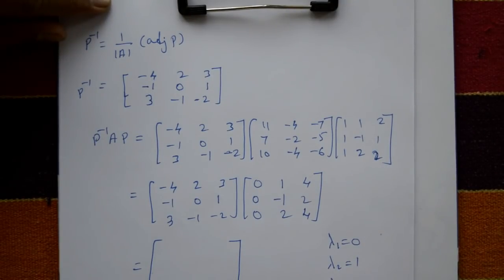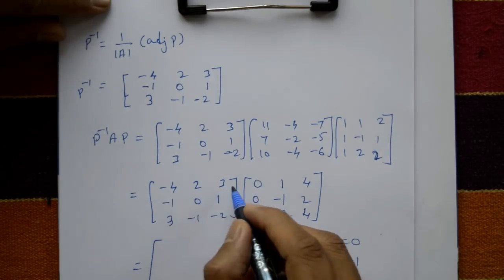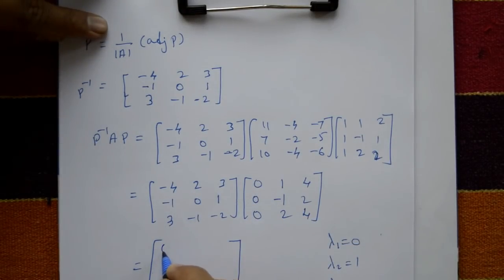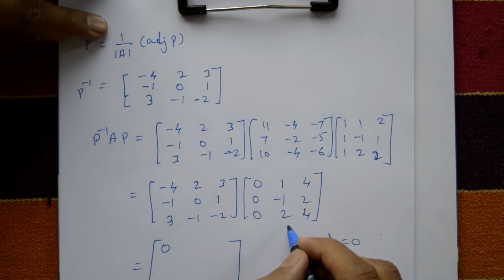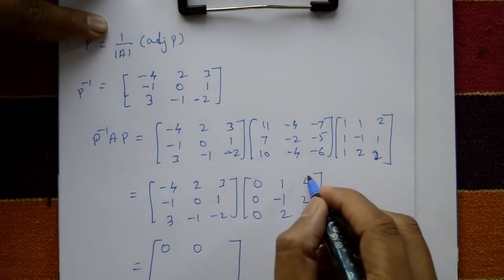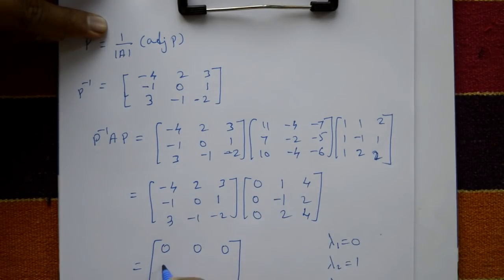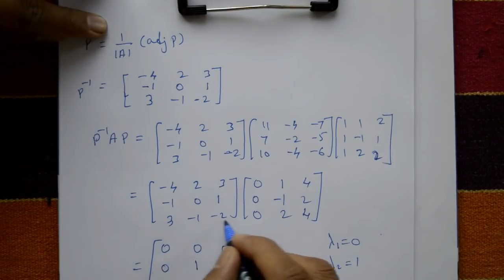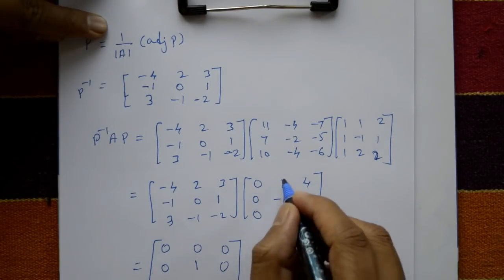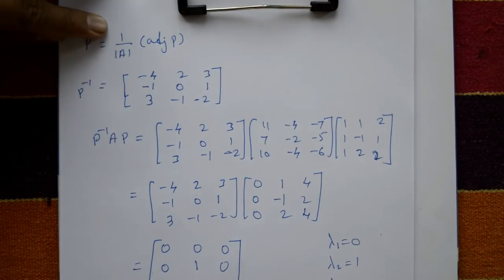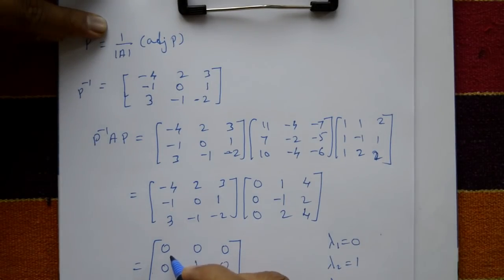After the final multiplication by P, the result is the diagonal matrix: first row [0,0,0], second row [0,1,0], third row [0,0,2]. The diagonal entries are exactly the eigenvalues λ₁=0, λ₂=1, λ₃=2. This is the required diagonal matrix.